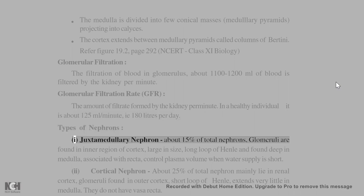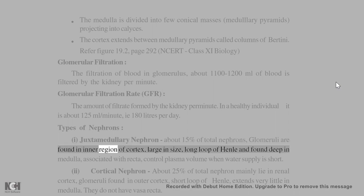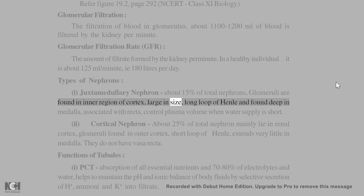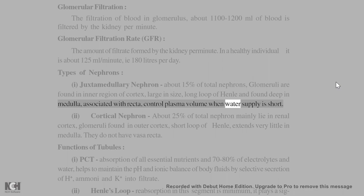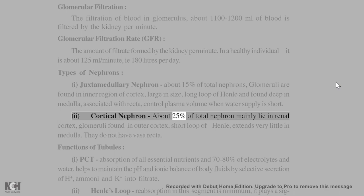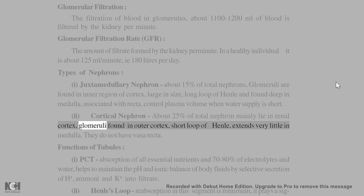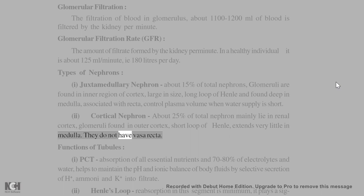Types of nephrons: 1. Juxtamedullary nephron — about 15% of total nephrons; glomeruli found in the inner region of cortex; large in size; long loop of Henle found deep in medulla; associated with vasa recta; controls plasma volume when water supply is short. 2. Cortical nephron — about 85% of total nephrons; mainly lie in the renal cortex; glomeruli found in outer cortex; short loop of Henle, extends very little into medulla; do not have vasa recta.